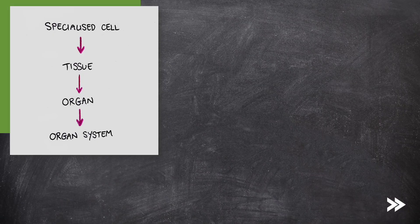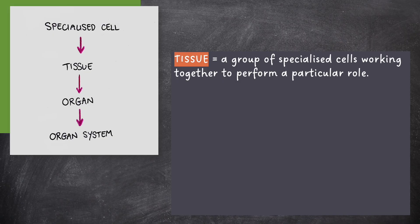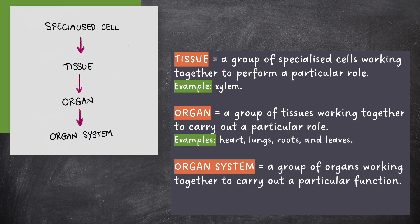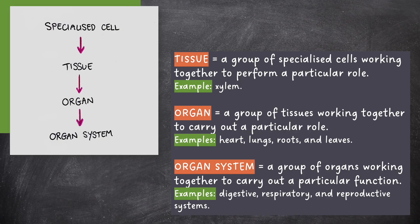Finally, we need to know about tissues, organs, and organ systems. A tissue is a group of specialized cells working together to perform a particular role — for example, xylem tissue. A group of tissues working together to carry out a particular role is called an organ — for example, the heart, lungs, roots, and leaves. A group of organs working together to carry out a particular function is called an organ system — for example, the digestive, respiratory, and reproductive systems.